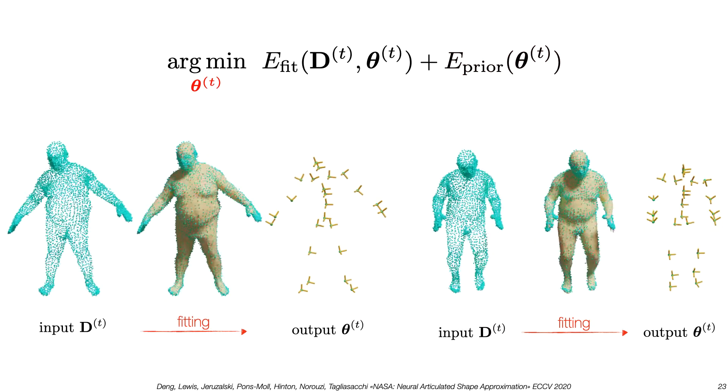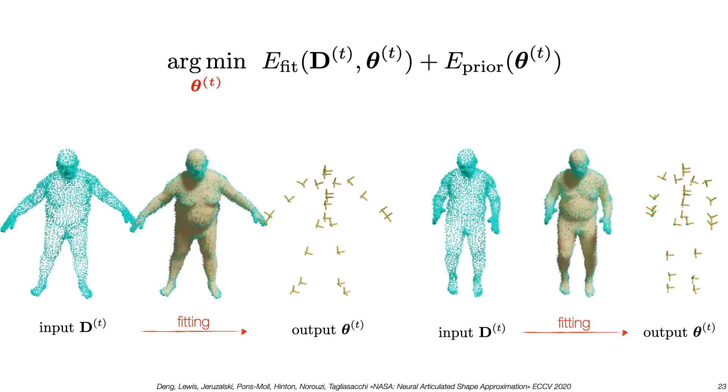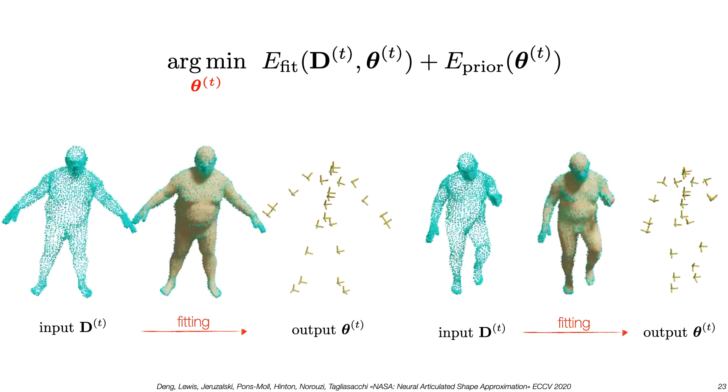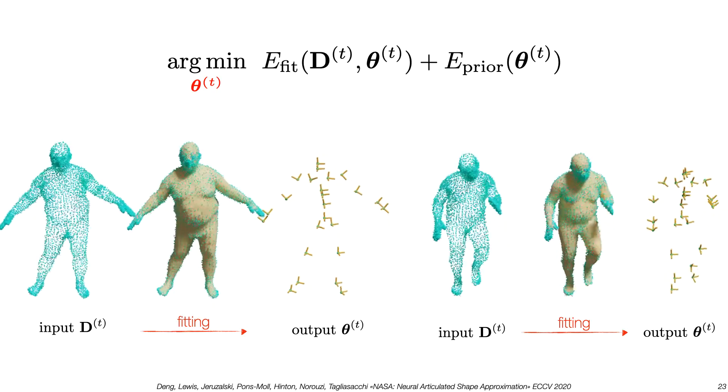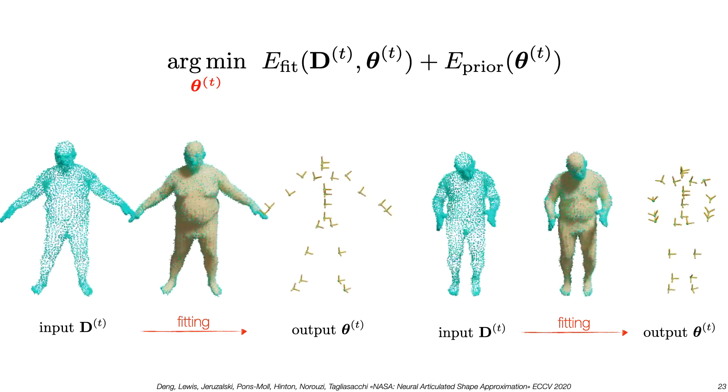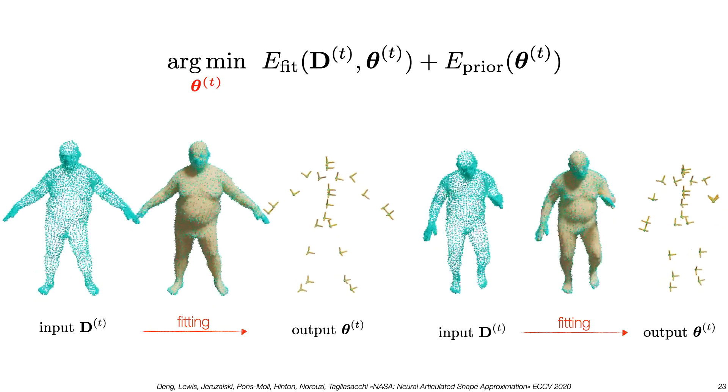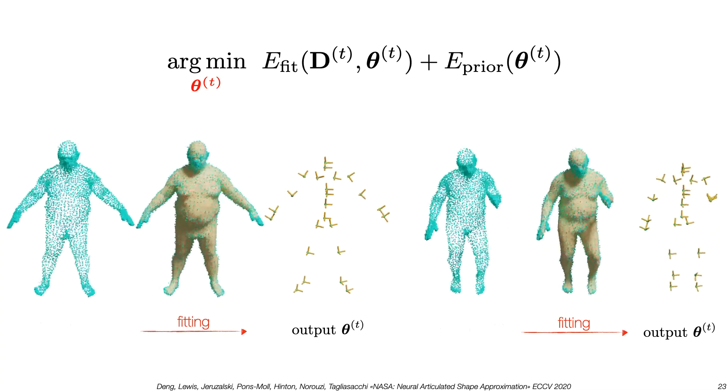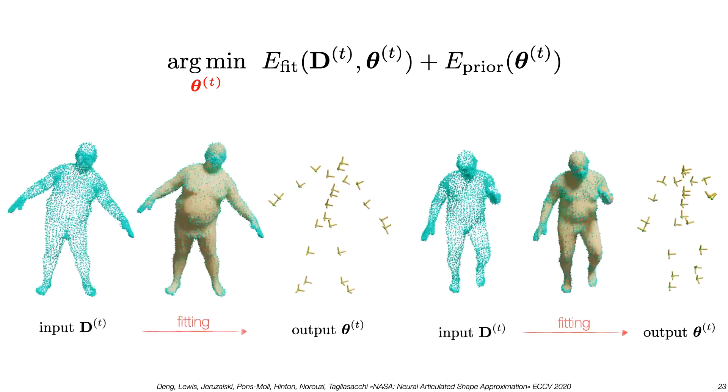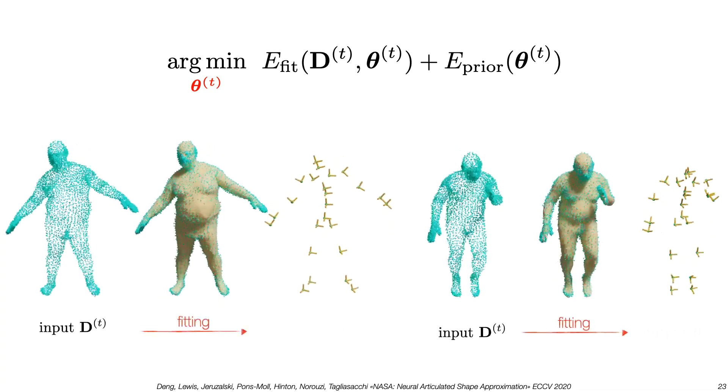We now have everything we need to perform generative tracking with neural networks. Note that we only optimize the pose to track a point cloud. The networks that represent the object have frozen weights. Given an input point cloud, we fit our neural model to the points and recover the coordinate frames.